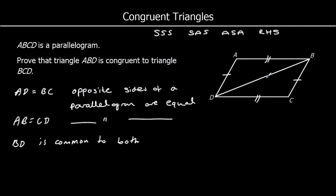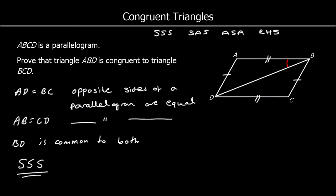Therefore we've got Side Side Side, so the triangles are congruent. We could have also said that the two angles opposite each other in a parallelogram are equal and gone with Side Angle Side, or used alternate angles and gone with Angle Side Angle. There are multiple ways of answering this question, but we need to give a reason for each stage of working and arrive at one of these rules for why the triangles are congruent.